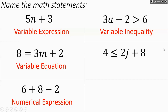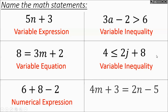Another example would also be a variable inequality — a less than or equal to symbol is still an inequality, and there's a variable. Finally, if there are numbers on both sides, an equal sign, and variables, it's a variable equation.